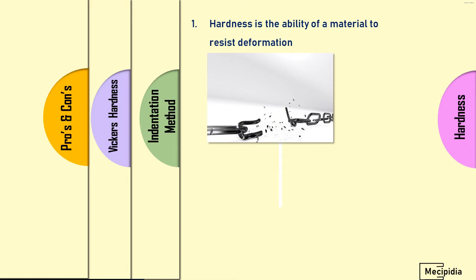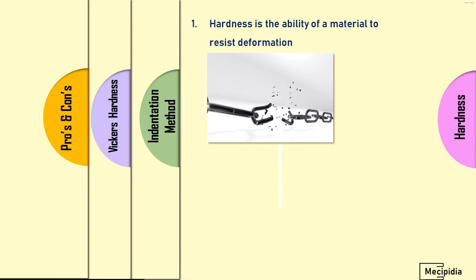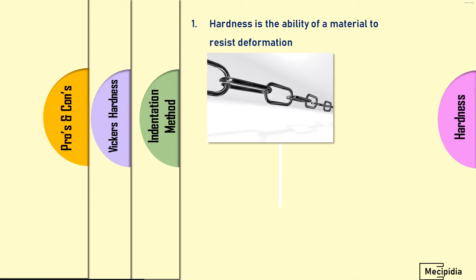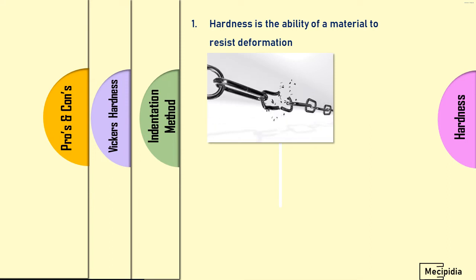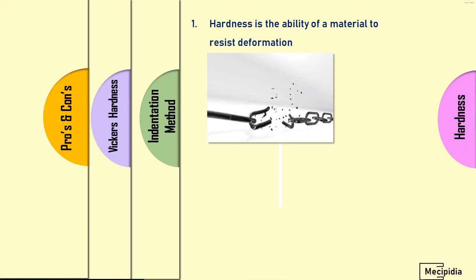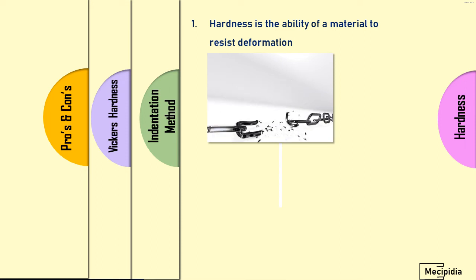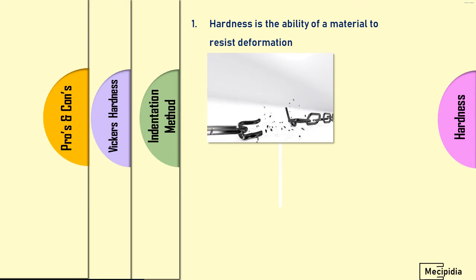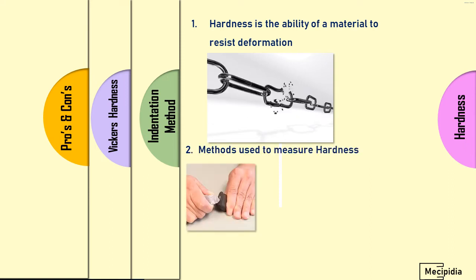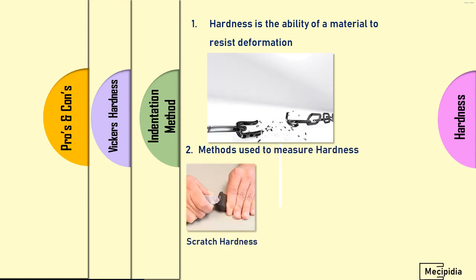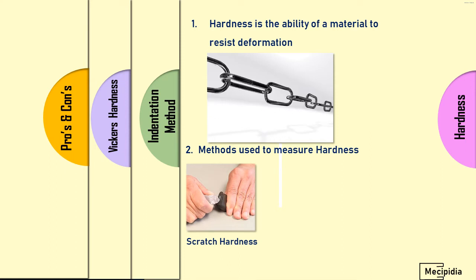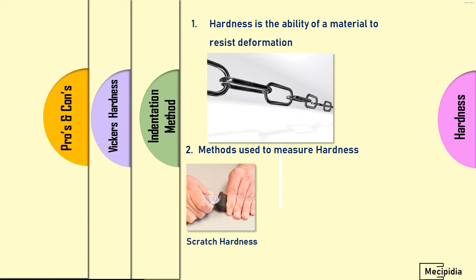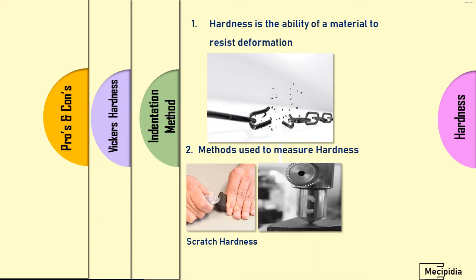Hardness is the ability of a material to resist deformation. You can see the image here — up to the point of fracture, the material is restricting breakage. That particular resistance ability is called hardness. There are three ways used in measuring hardness in materials. The first one is scratch hardness, where by scratching the material the hardness is evaluated.